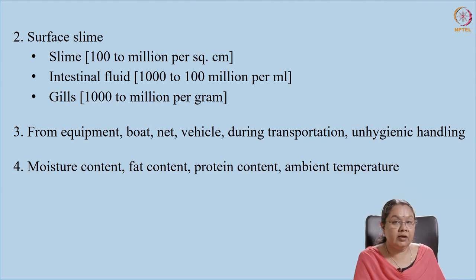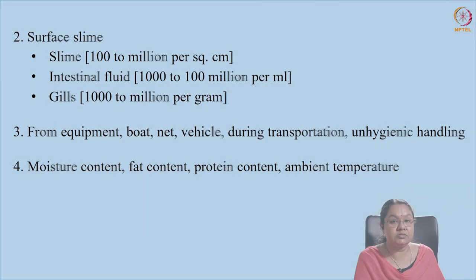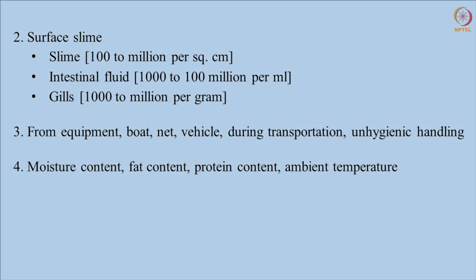We also have to be careful how the fish is handled with equipment. If handling is not proper or contact surfaces are not properly cleaned or hygienic, they may also transfer microorganisms to the fish. Moisture, fat, and protein are the main components that undergo deterioration, and microorganisms may survive on these macro components. But this only happens when the temperature is ambient — that is, when the optimum temperature for microbial growth is provided. Only then will the microbes survive on these macro components and cause spoilage.